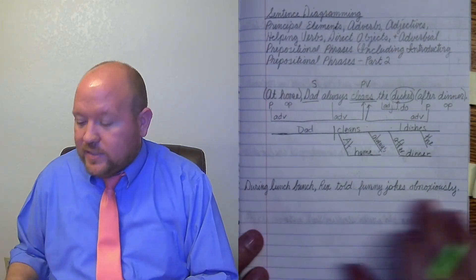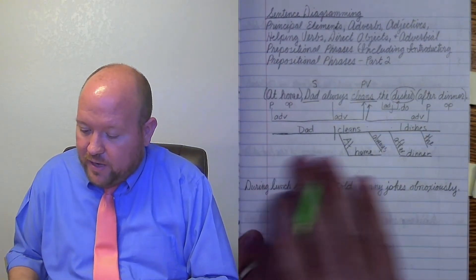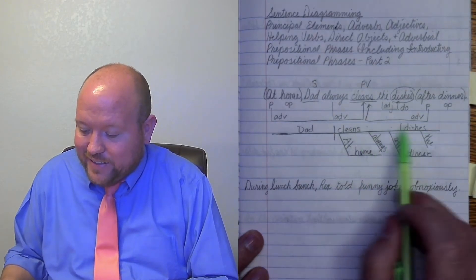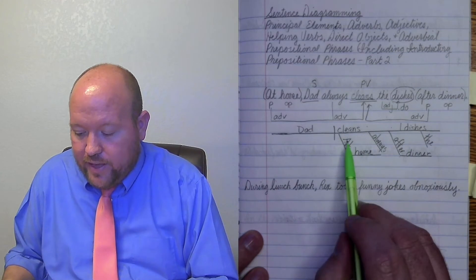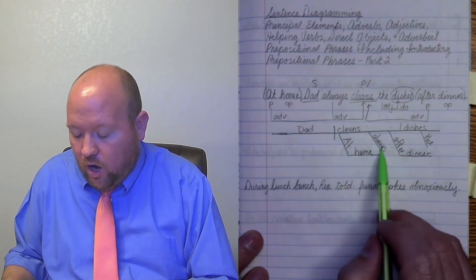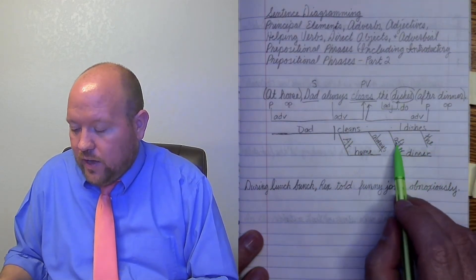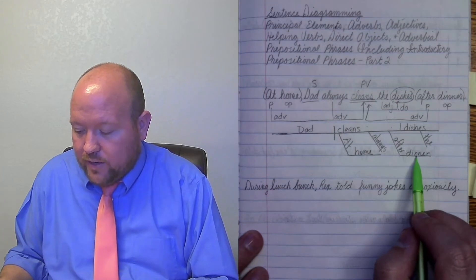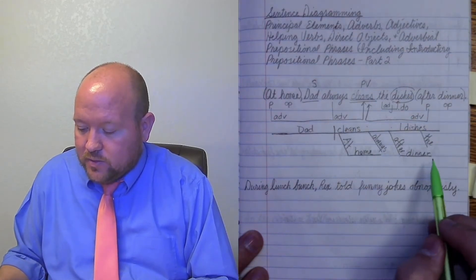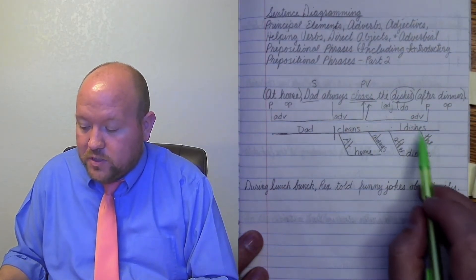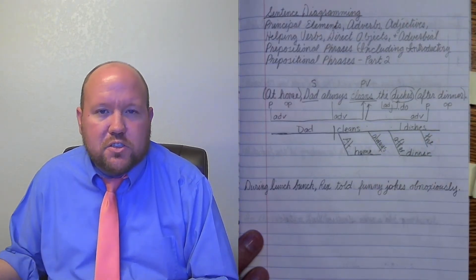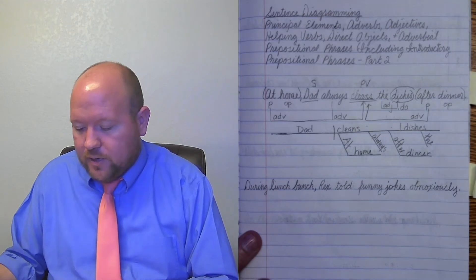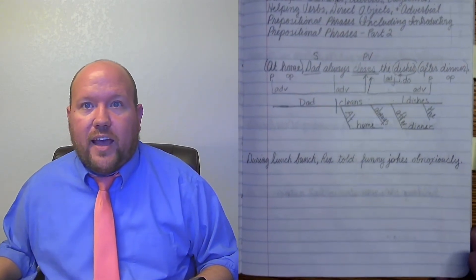All right. So that's how we diagram this. So we have dad cleans dishes. That's what the sentence is primarily about. And then at home tells us where, always tells us how often after dinner tells us when and the dishes tells us what he's cleaning and the dishes. So always kind of tells us to what extent, all right? He always does it. Okay. Let's look at this sentence.